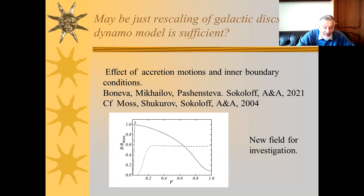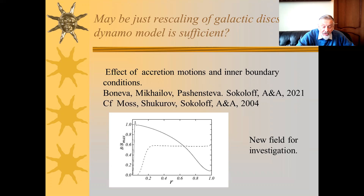Maybe this pragmatic model can be obtained just by rescaling of well-known models of galactic magnetic fields — the same disk of different sizes and so on? No — new dynamo effects are expected. I have to refer here to a recent paper by Bonno, Mikhail, Passion, and myself.